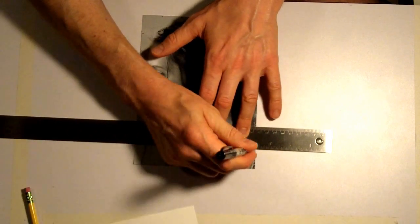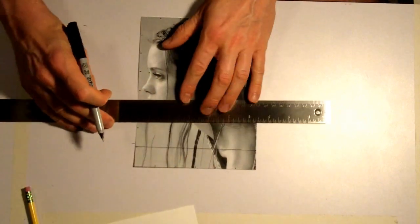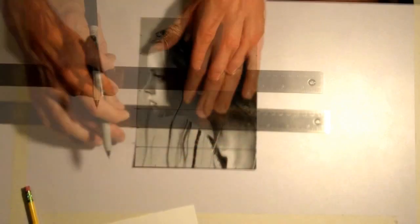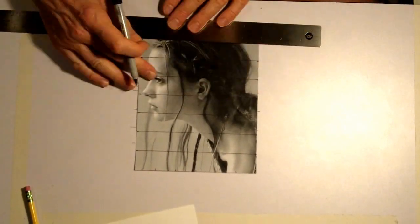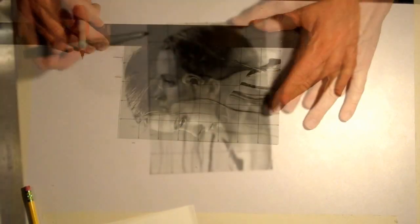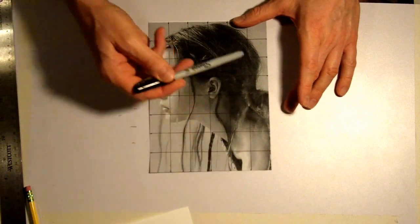So now what you're going to do is match up each mark on the left and the right, use your ruler and draw perfectly straight lines, both vertically and horizontally. So now I have vertical and horizontal lines every one inch.